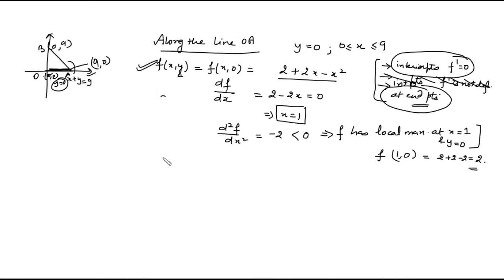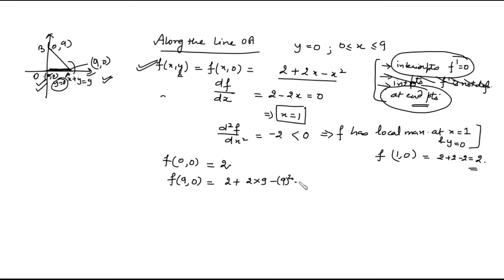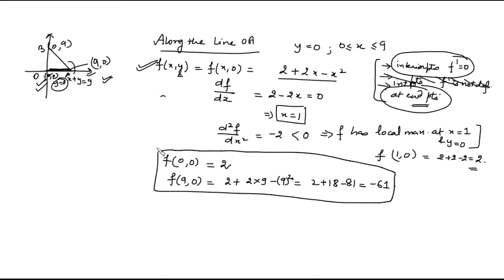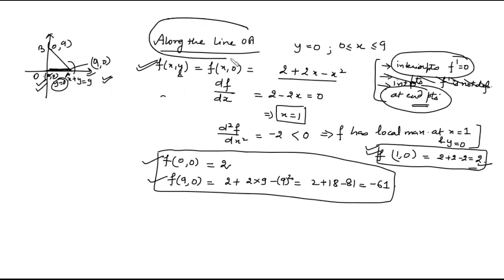The endpoints along OA are (0,0) and (9,0). At (0,0), the value of the function is 2. At the endpoint (9,0), the value is 2 + 2(9) − 9² = 2 + 18 − 81 = −61. So along boundary OA, the function values are 2 at the interior critical point (1,0), 2 at (0,0), and −61 at (9,0).